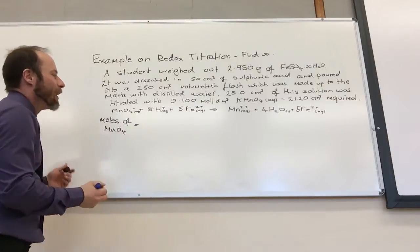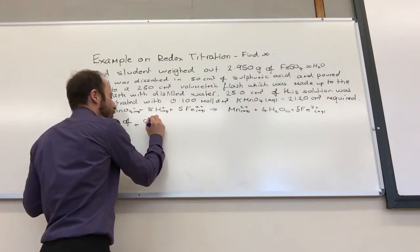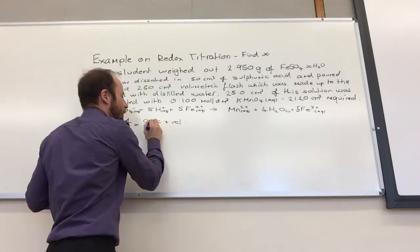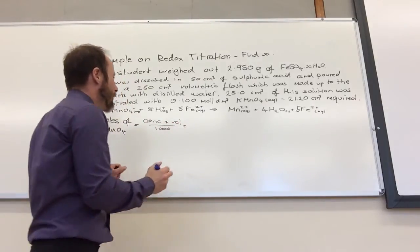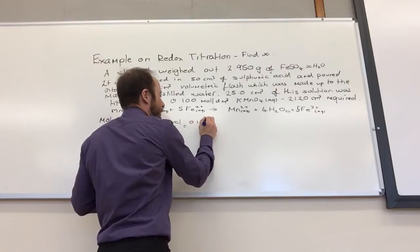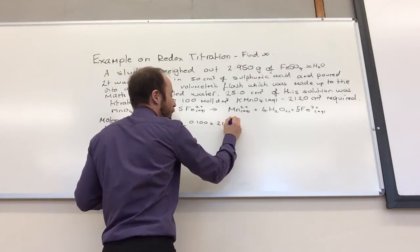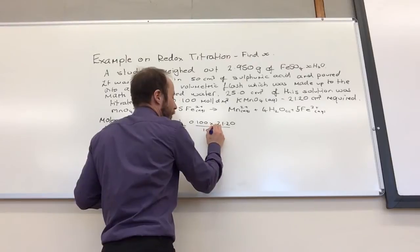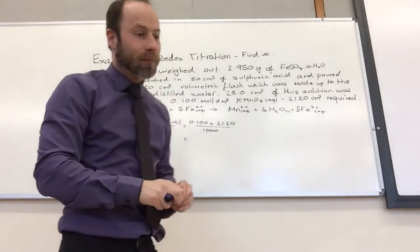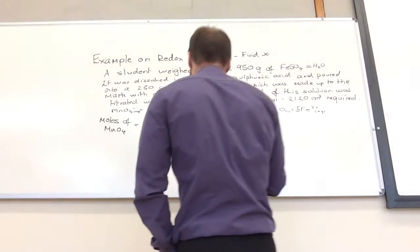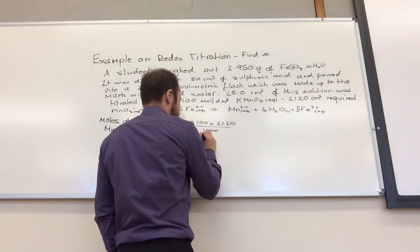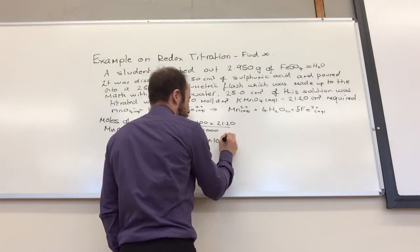Fabio, yeah, which we know is going to be concentration times volume over 1000. So, my concentration is 0.100, the volume I used 21.20 over 1000, and that equals 2.12 times 10 to the minus 4.